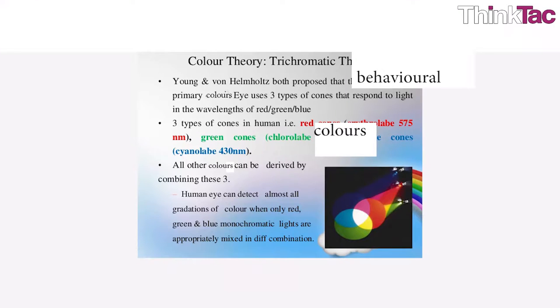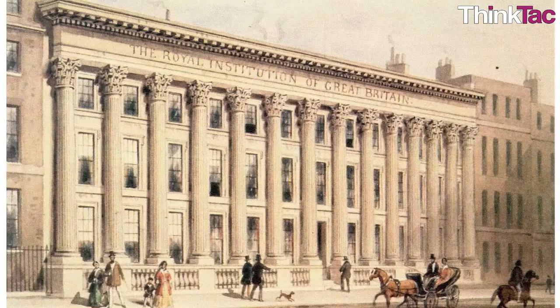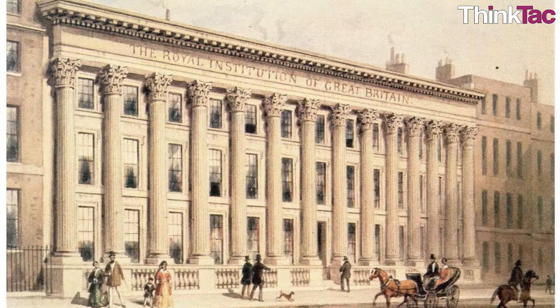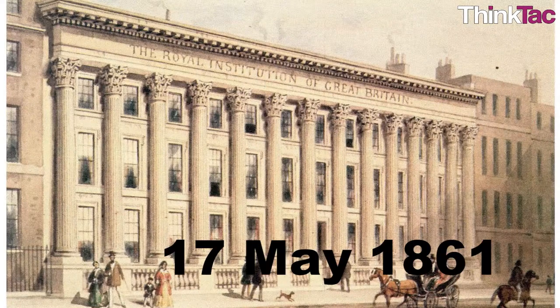Maxwell used this to demonstrate Young's trichromatic vision theory during a lecture at the Royal Institution of Great Britain on May 17, 1861.